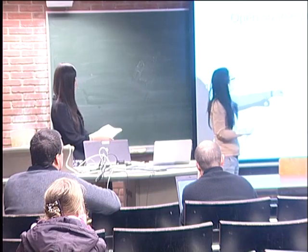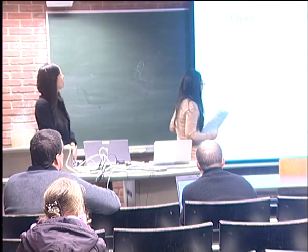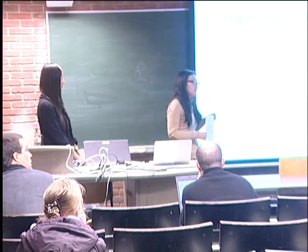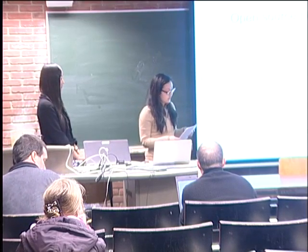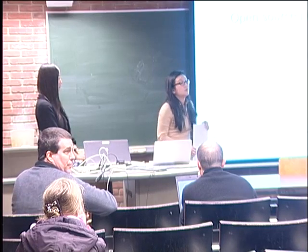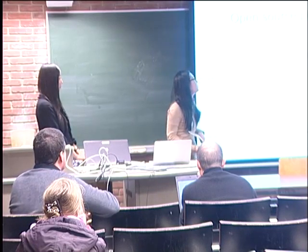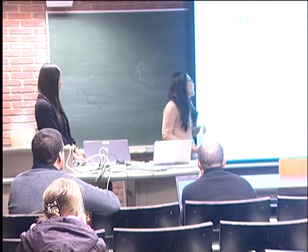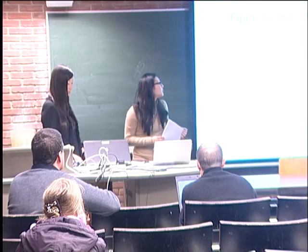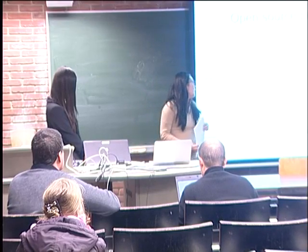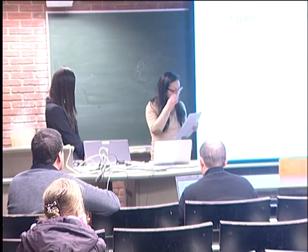Every subsequent developer can be held liable for this infringement even when they are not aware that the contribution is infringing. In general, creating a computer program — even open source — while completely unaware of the existence of any IP rights of a third party can be used as a defense to willful IP infringement, but it is not a defense to IP infringement in general. Because open source projects are developed by a community rather than one person or organization, these problems occur in real life. In the case of a big project with thousands of developers, it is not reasonable to expect that every developer will check if there are infringements in the code by other developers.